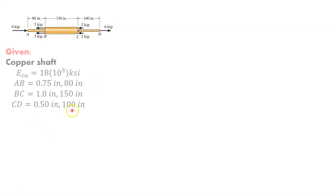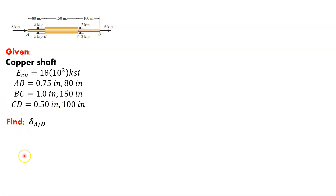Let's consolidate what we're given. We've got a copper shaft with Young's modulus of 18 times 10 to the 3rd KSI. Segment AB is 0.75 inches in diameter and 80 inches in length. BC is 1 inch in diameter and 150 inches in length. And CD is 0.5 inch in diameter and 100 inches in length. We're being asked to find the displacement of A with respect to D.